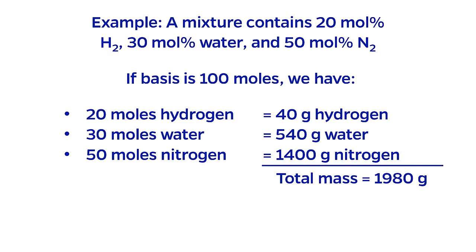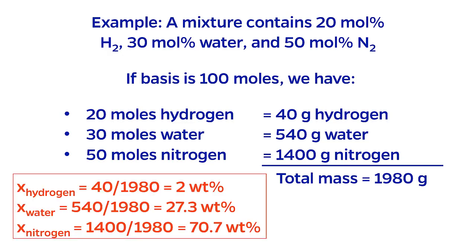Now we sum those masses. 40 plus 540 plus 1400 equals 1980 grams. Finally, we calculate mass compositions by dividing the mass of each component by the total. For hydrogen, I get 2 weight percent. For water, 27.3 weight percent. And for nitrogen, 70.7 weight percent.